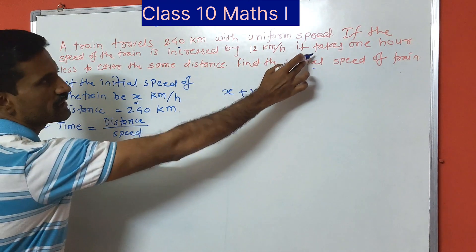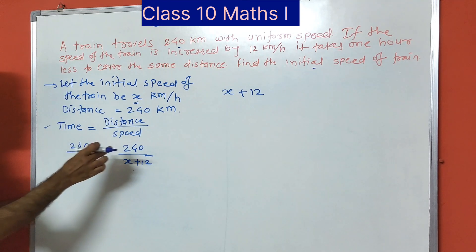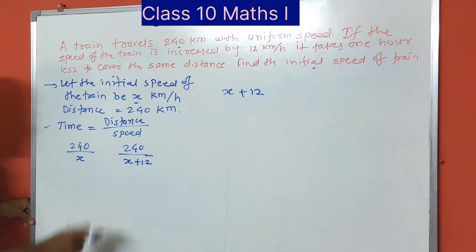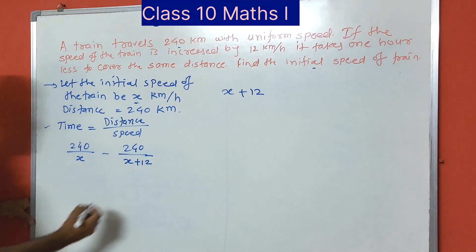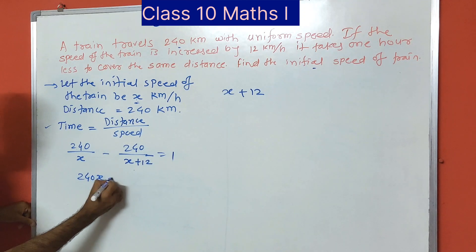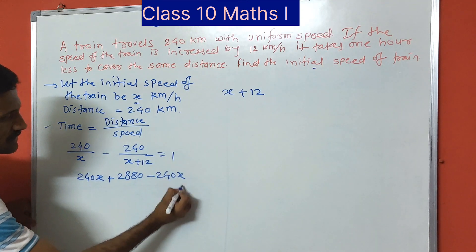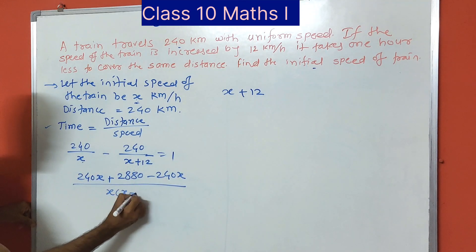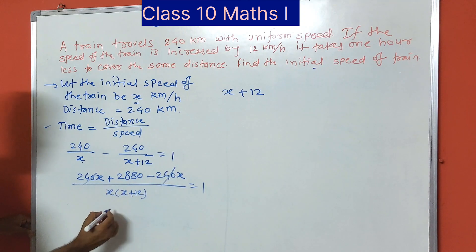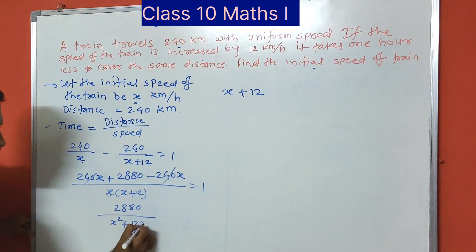If the speed of the train is increased by 12 km per hour, it takes one hour less to cover the distance. So the difference between the two times is 1 hour: 240 divided by x minus 240 divided by x plus 12 equals 1. In the numerator, 240x minus 240x cancels, leaving 2880 divided by x times x plus 12, which equals 1.